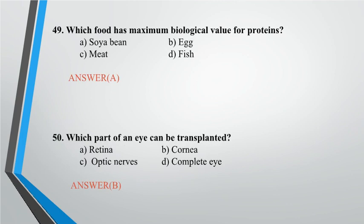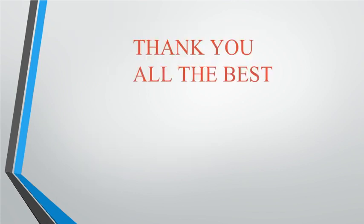Question 50: Which part of an eye can be transplanted? A. Retina, B. Cornea, C. Optic nerves, D. Complete eye. Answer: B. Thank you, all the best.